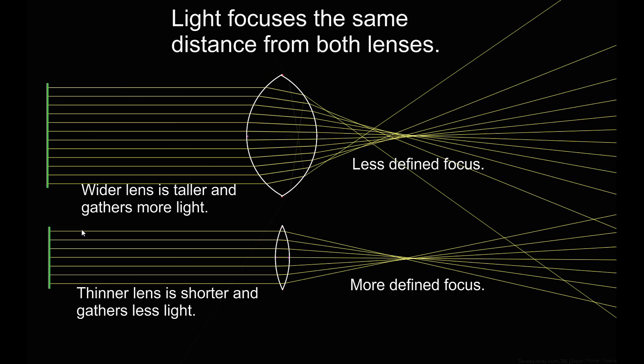To have the light beams focus more to a point, we need a thinner lens. But in order to make the location where the beams come together closer to the lens while making the lens thinner, we're going to also have to make it shorter. Of course, the shorter lens also gathers less light, so it still wouldn't be good for dim objects.